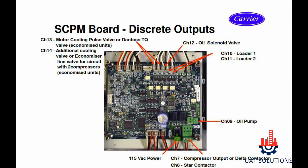Discrete outputs connected on the TCPM board: motor cooling valve connected on channel 13, additional cooling valve connected on channel 14, oil solenoid valve connected on channel 12, compressor capacity control loaders are connected on channels 10 and 11, oil pump is connected on channel 09, and compressor contactors are connected at channels 7 and 8.